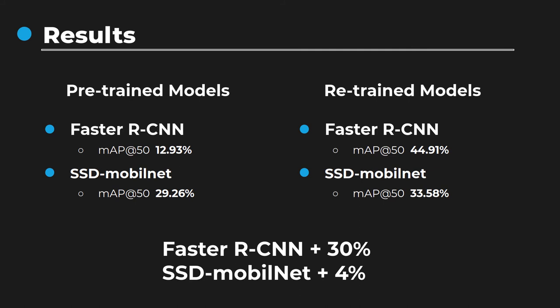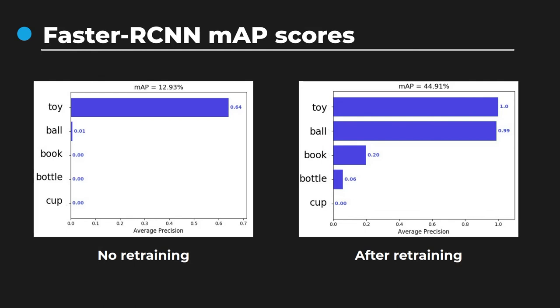We achieved an improvement of 30% with the Faster RCNN network and only 4% with the SSD model. The poor increase of accuracy with the SSD model can be explained by the fact that we didn't fine-tune the hyperparameters. For example, it is well known that carefully choosing the set of anchors is a crucial parameter for SSD architecture which could have improved the accuracy gain. The reason we chose not to fine-tune hyperparameters and kept the defaults was to propose an autonomous pipeline where no human supervision was required. Looking at per-class MAP scores for the Faster RCNN network, we can see gains in accuracy for large objects, especially the toy and the ball, and a little with the book, but little or no improvement for small objects like the cup or bottle. This showed the limitation of our approach in its current form, where for small objects the vision pipeline failed to produce good data, and consequently the network failed to learn those objects.